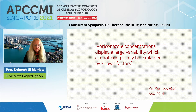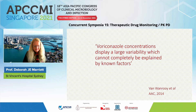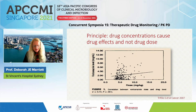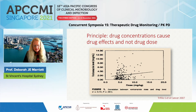Voriconazole concentrations display large variability which cannot be completely explained by known factors. As recognized back in the early days by people such as Steve Trefilio, the dose of voriconazole bore absolutely no resemblance to the concentration achieved. This highlights the principle that drug concentrations cause drug effects — not the actual dose given to the patient — and this is particularly important with fixed dosing that occurs with many of the drugs we use.